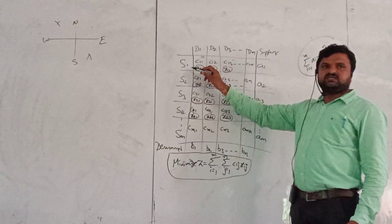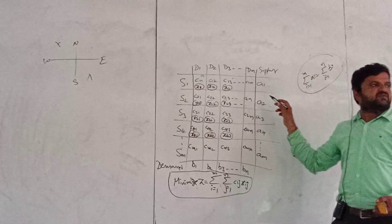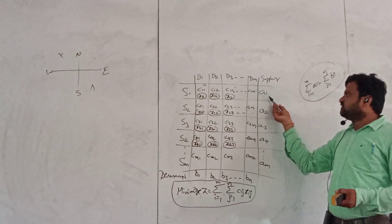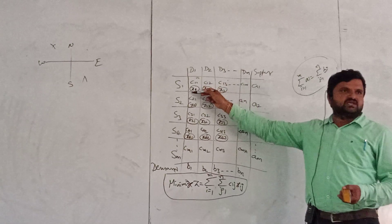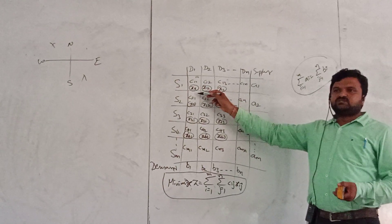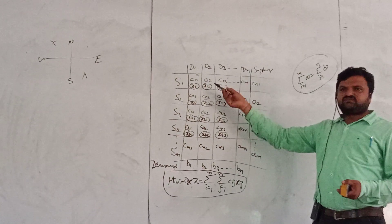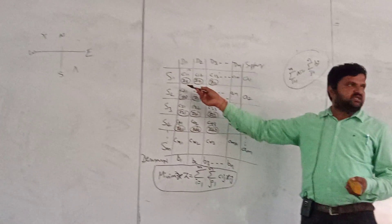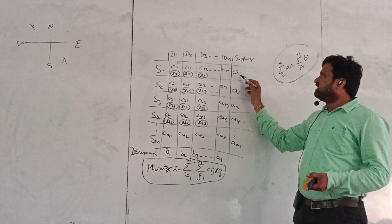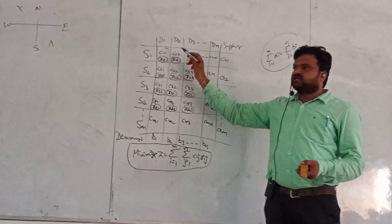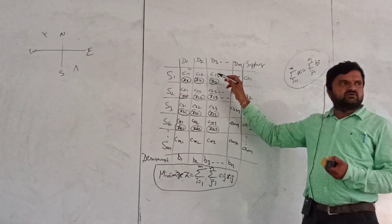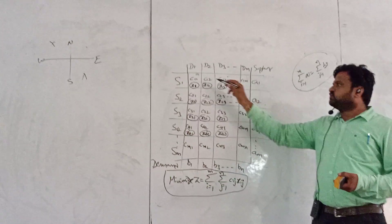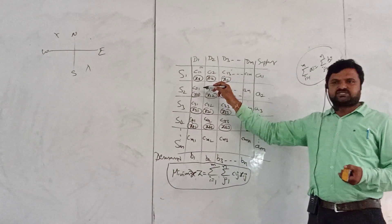At the supply centre there is a supply of A1 units. We are supplying all these A1 units to the demand centre D1 only. So there is no leftover goods at the supply centre A1.